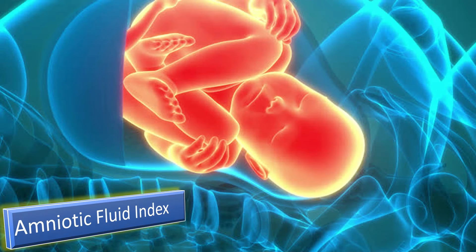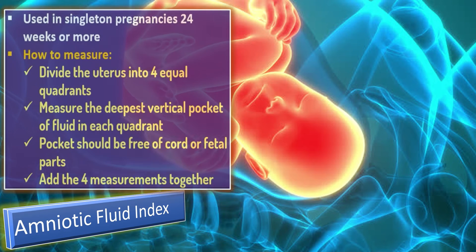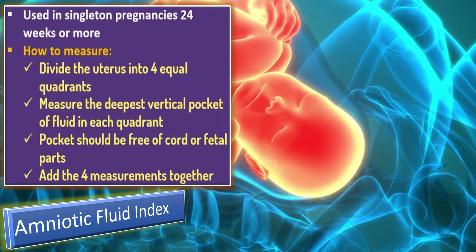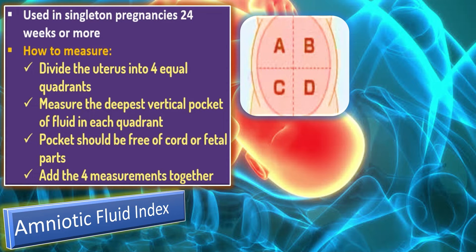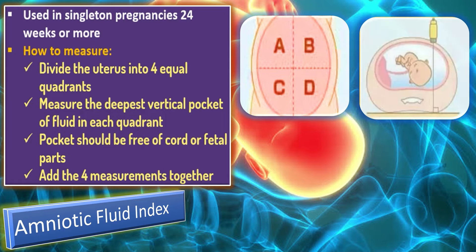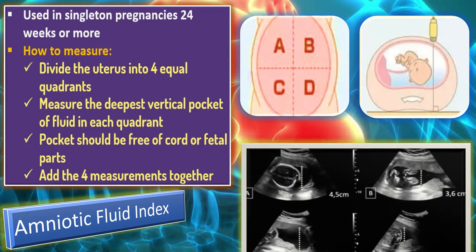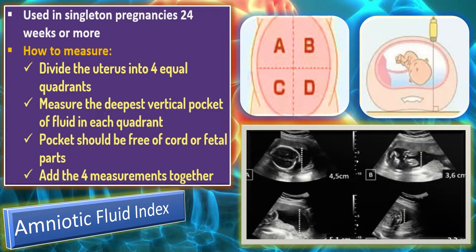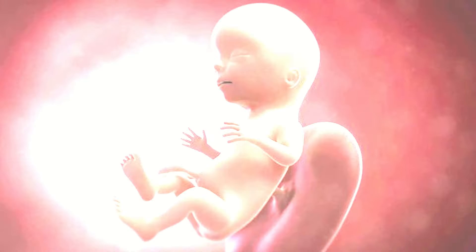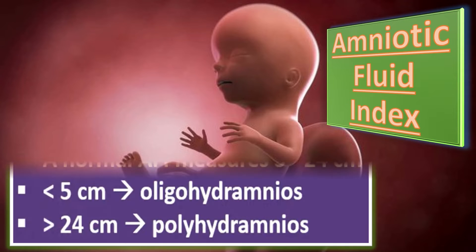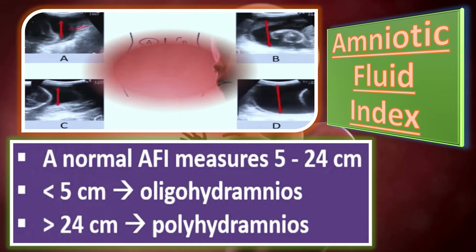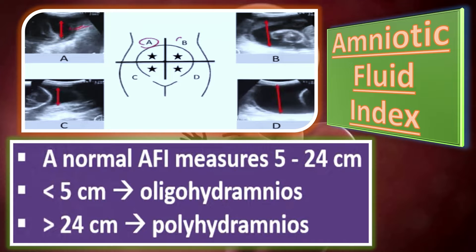The amniotic fluid index is used in singleton pregnancies of 24 weeks or more. To measure it, divide the uterus into 4 equal quadrants and measure the deepest vertical pocket of fluid in each quadrant. The pocket should be free of cord and fetal parts. Add all 4 measurements together. The normal amniotic fluid index measures between 5 to 24 cm. Less than 5 cm means oligohydramnios and more than 24 cm means polyhydramnios.